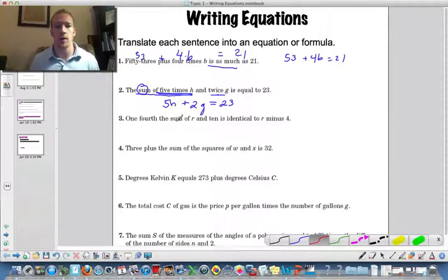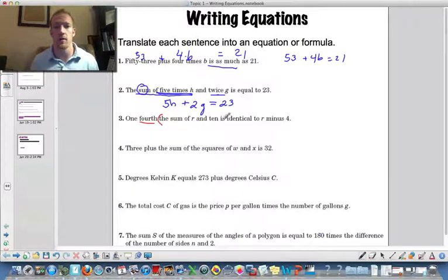1 fourth the sum of r and 10. So it says 1 fourth of this, the sum of r and 10. So 1 fourth the sum of r and 10. So that means you've got to add the 10 first, then take a fourth.